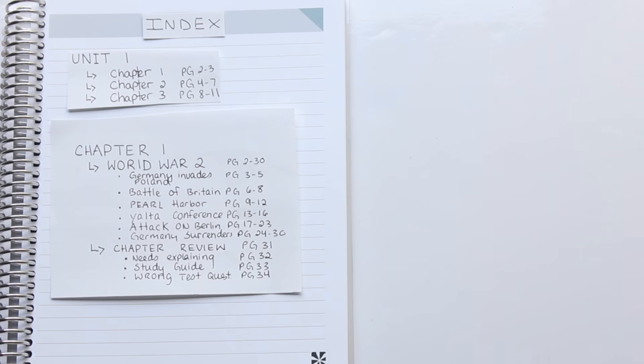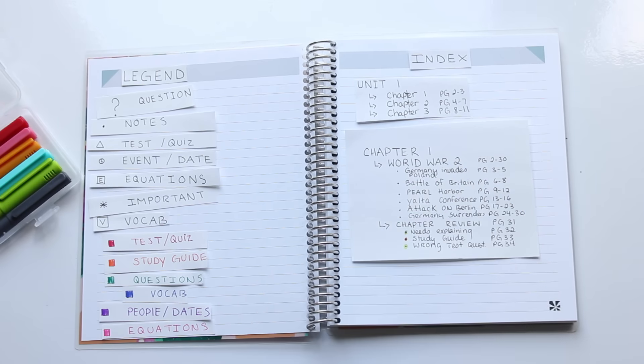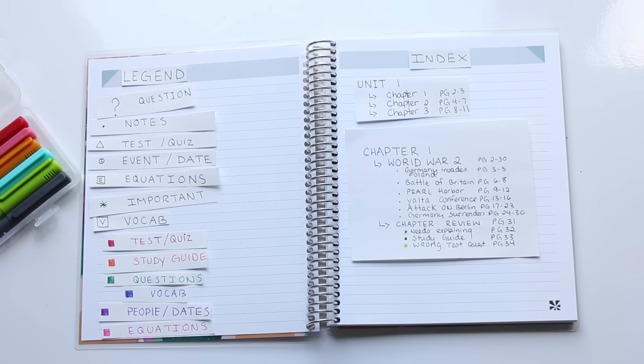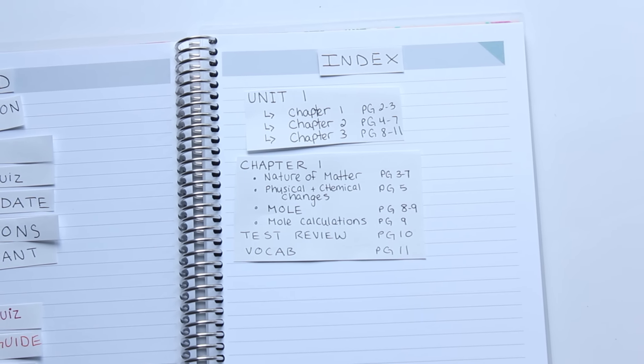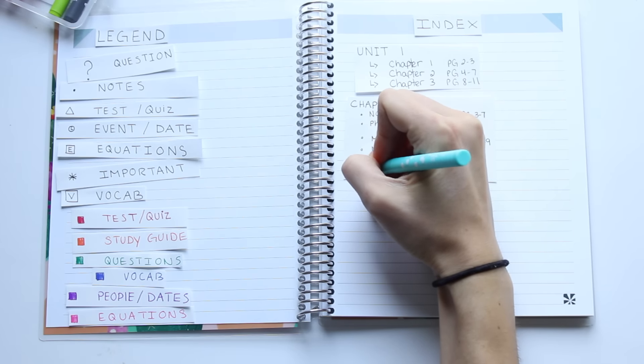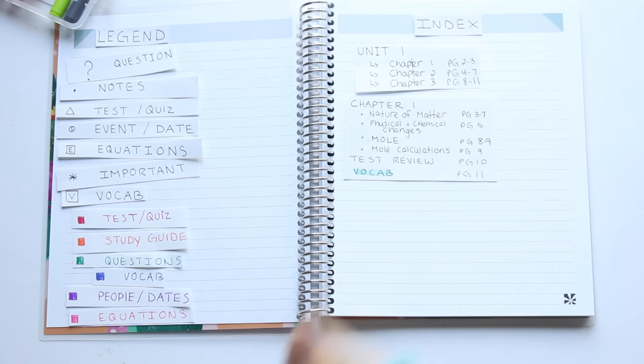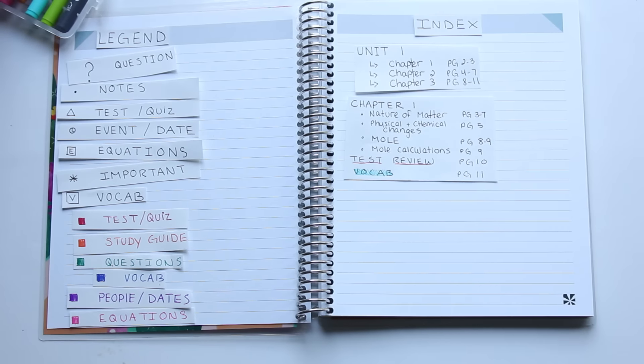I'm color coding them that way when I go back to study I can see clearly where the questions are that I need to find. Now here's another example of how you can index. Here we're actually taking out specific things from multiple pages to organize. See how page nine was listed two times? That's because I wanted to remember that I had two things on that page that were really important. Since one of them was a calculation or an equation, I'm going to highlight it in pink, and because the other one was a vocab word, I'm going to highlight it in blue.